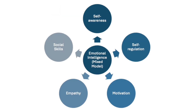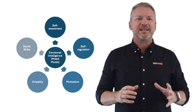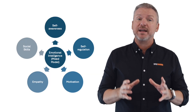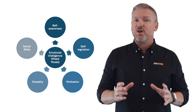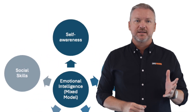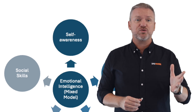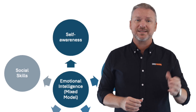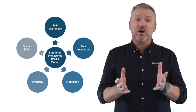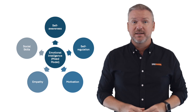The next model is Goleman's Mixed Model. It's similar but expands upon the area of your effect on others. It consists of the following. Firstly, self-awareness: your ability to know your own emotions, your strengths and weaknesses, what drives you, your values and goals, and recognise their impact on others. Would you consider yourself highly self-aware?